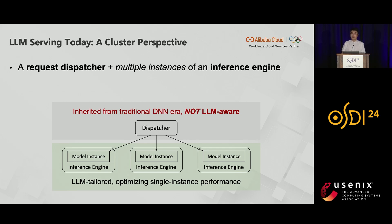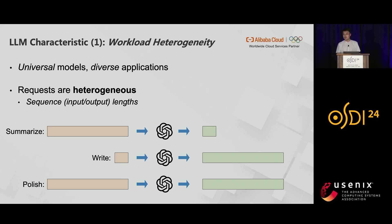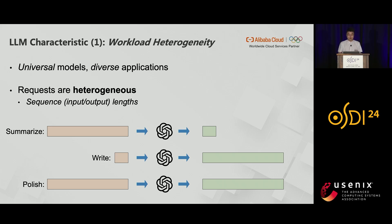The problem is that LLMs are different and require a new design philosophy for the scheduling layer. The first characteristic of LLMs is that workloads are heterogeneous. LLMs are universal models in the sense that the same model can work for different tasks with context-specific inputs provided. So LLMs can have diverse applications and therefore heterogeneous requests. Requests will have different input and output lengths — for example, you might want to use an LLM to summarize an article, write an article from a simple prompt, or polish an article you've just written, and these requests will have drastically different ranges.